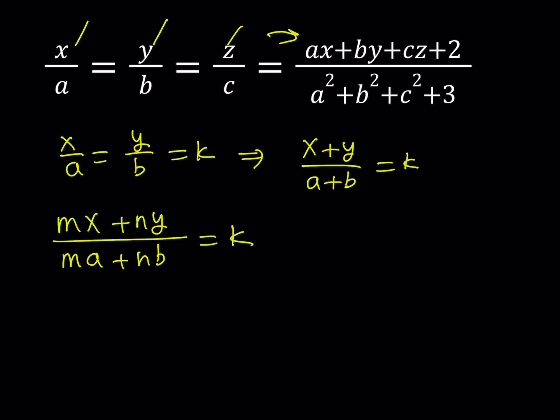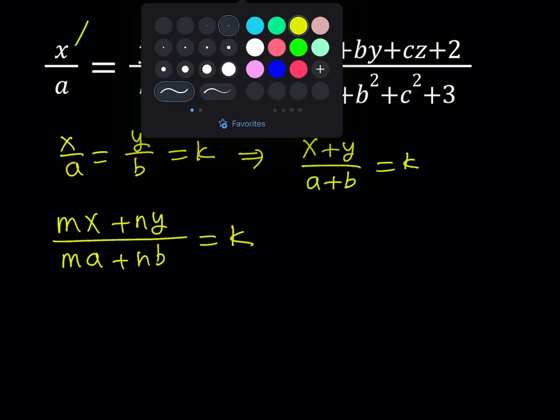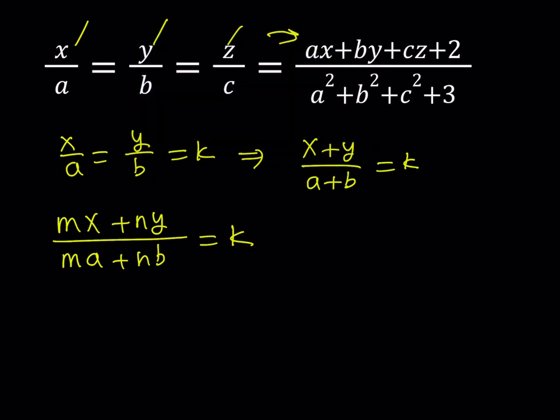To make the left hand side look like that, I'm going to multiply x, y and z by a, b and c respectively. And of course I'm going to do the same thing at the bottom. If you multiply x by a, it's going to be ax, then by, then cz.